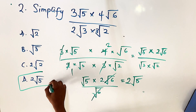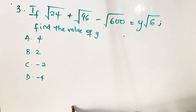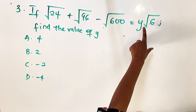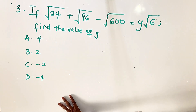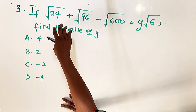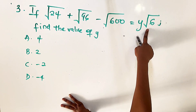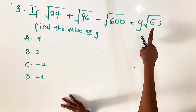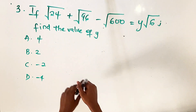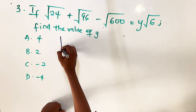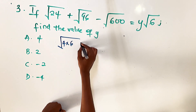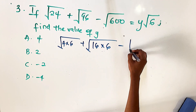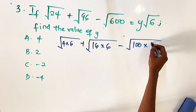Question three: if root 24 plus root 96 minus root 600 equals y root 6, find the value of y. We want to simplify each term so that 6 appears under the square root sign. We know 24 equals 4 times 6, so root 24 becomes root(4 times 6). Similarly root 96 becomes root(16 times 6), and root 600 becomes root(100 times 6).